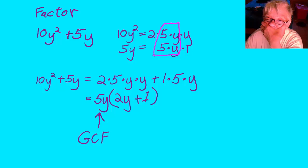5y is the GCF, and 2y plus 1 is the leftovers.